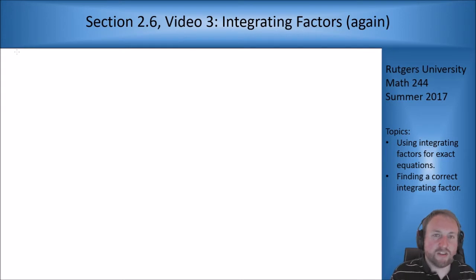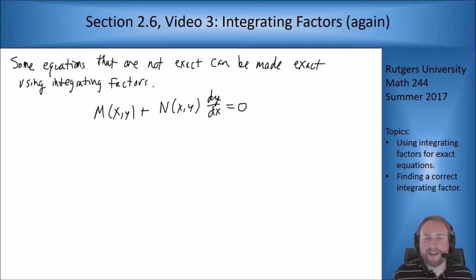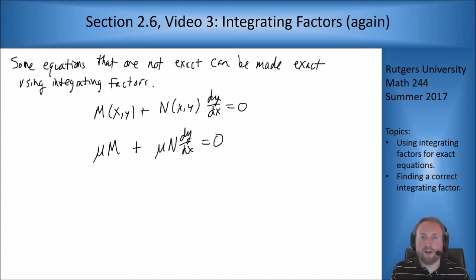The idea of this section is that equations that are not exact can sometimes be made exact by use of integrating factors. I have an equation M(x,y) + N(x,y) dy/dx = 0. And it's not exact, but I want to see if I can make it exact. So I'm going to multiply both sides by a function μ. On the left-hand side, I get μM + μN dy/dx = 0. I'm going to suppress the arguments of the functions, but they're all functions of x and y at this point. If I want this equation to be exact, what do I need to happen?